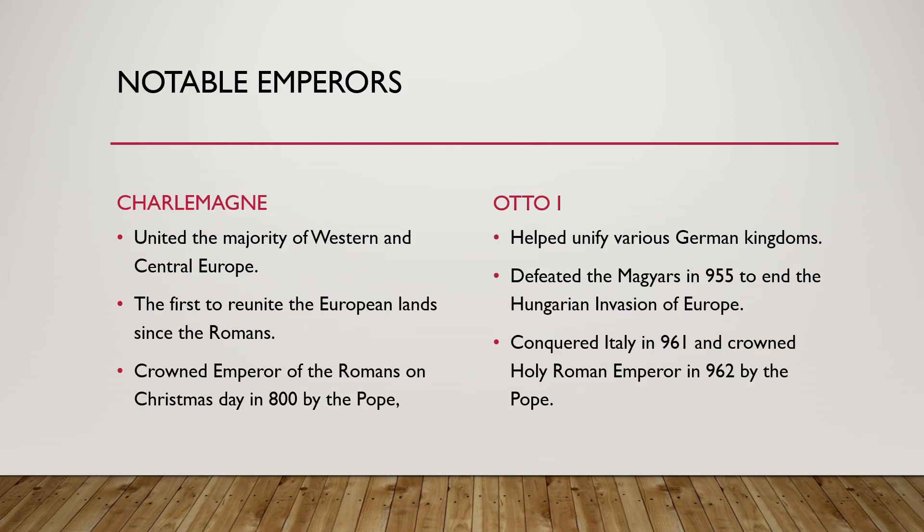Some notable emperors of the Holy Roman Empire — the first one was Charlemagne, like I mentioned earlier, and he united the majority of Western and Central Europe for the first time since the Romans. That's why he was crowned Emperor of the Romans on Christmas Day in 800 by the Pope.